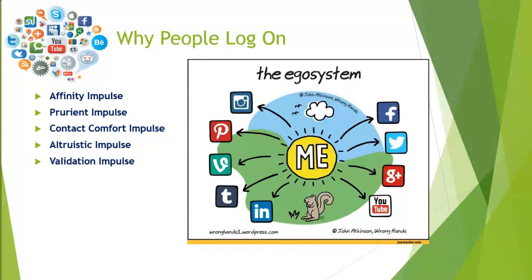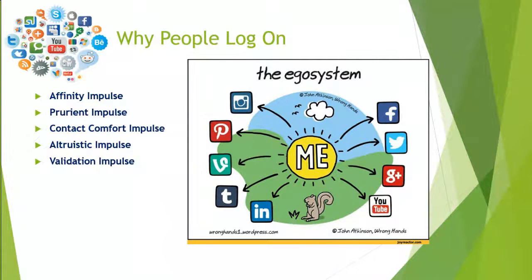The last one is the validation impulse. The validation impulse allows people to focus intently on themselves. You get a sense of excitement when you get that notification that someone liked, commented, or retweeted your content, sent you a snap, or commented on something you wrote online. The Internet really gives people validation and allows them to feel good about what they're doing online.